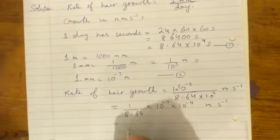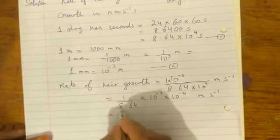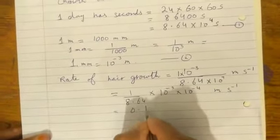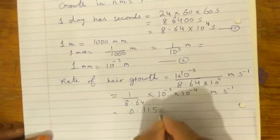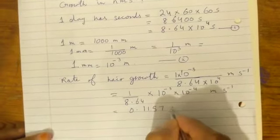After calculation, the value we get is 0.1157. So we have 0.1157 times ten to the power—